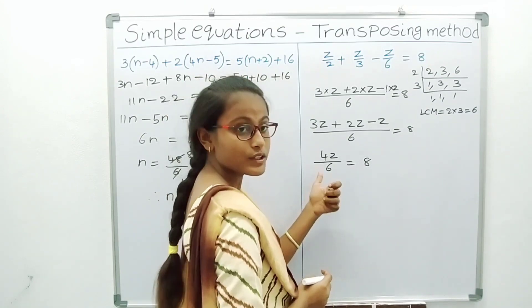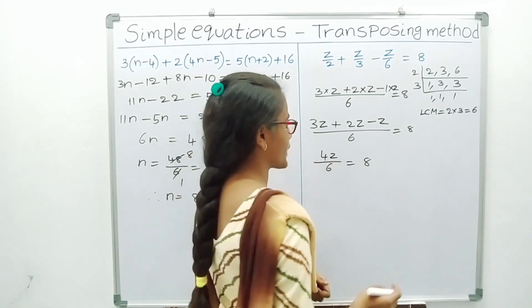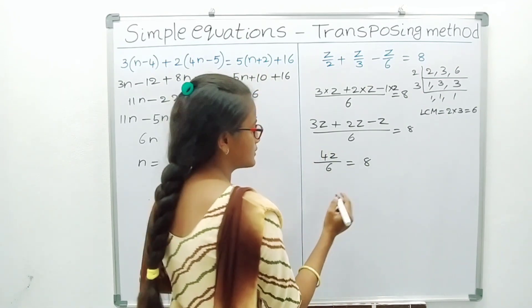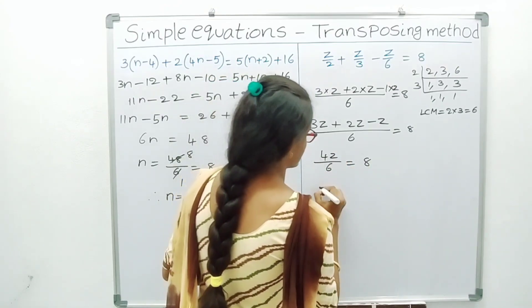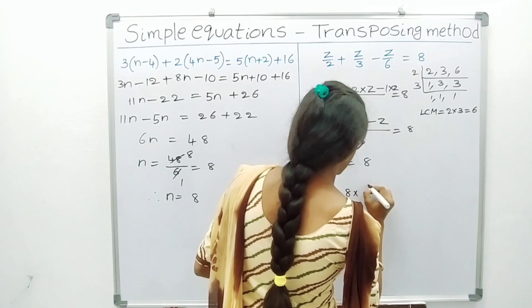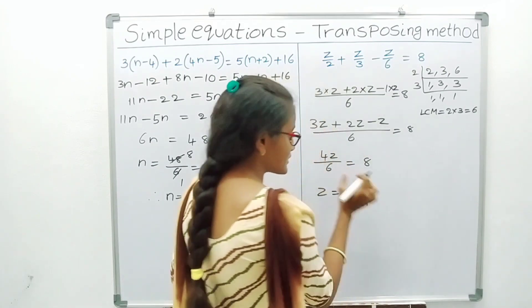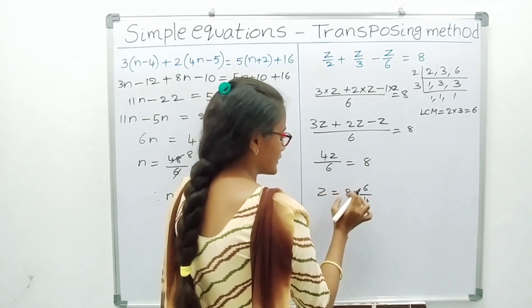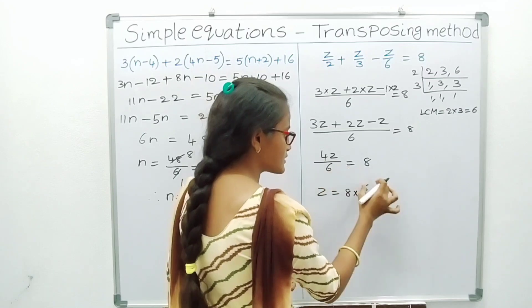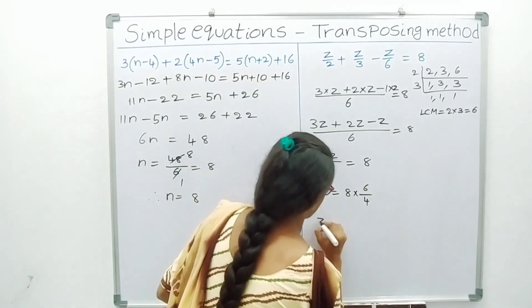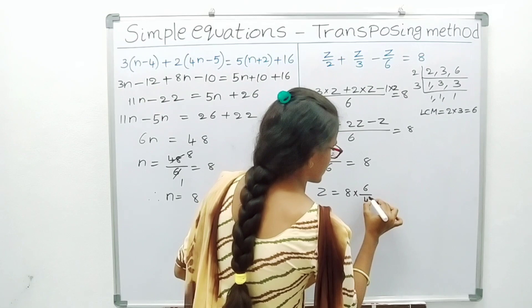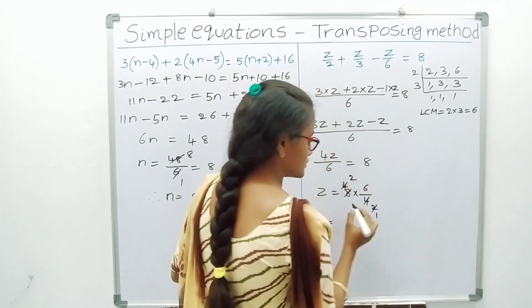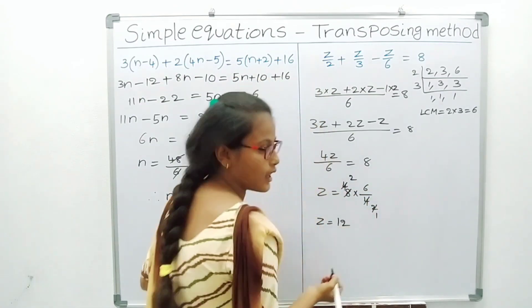Here, when we transpose 6 from LHS to RHS it multiplies, and when we transpose 4 from LHS to RHS it divides. So z is equal to 8 into 6 by 4. Simplifying: 2 into 6 is 12, divided by 2 is 6 — therefore z is equal to 12.